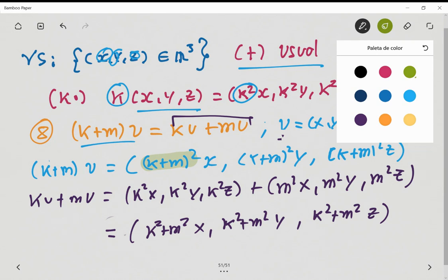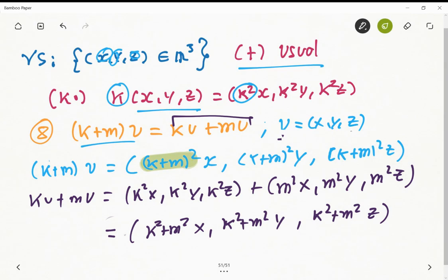And as I mentioned before, what happened here is that we got here k plus m squared, and here we got k squared plus m squared. These terms here are not the same.